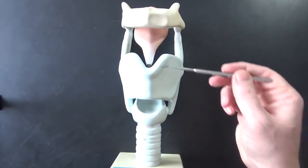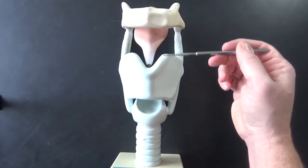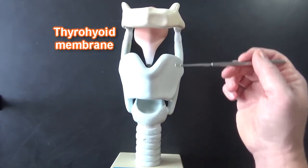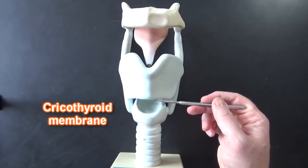Now there would be some membranes here connecting these two structures. The thyrohyoid membrane would be located here. The cricothyroid membrane would be right here.